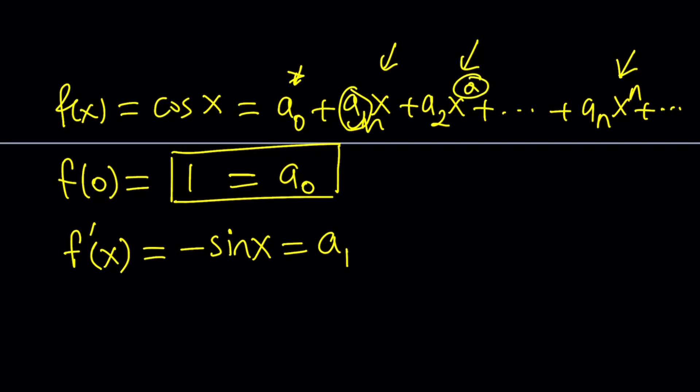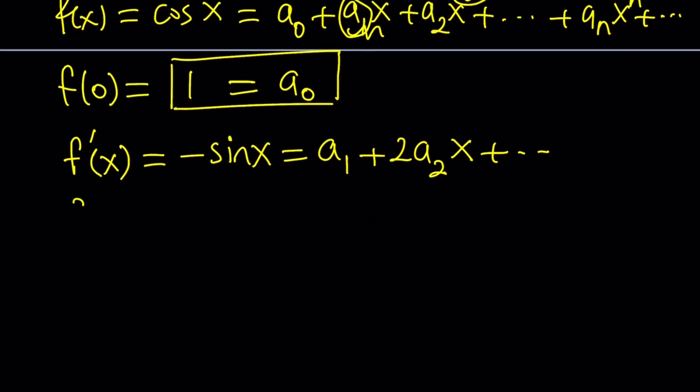And then to differentiate this, you're going to bring the 2 to the front, so on and so forth, the rules of differentiation. And then, from here, you differentiate and replace x with 0. What is sine 0? It's 0, right? What is negative 0? 0. Still negative 1 times 0.